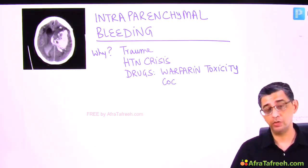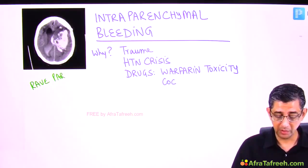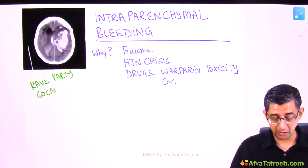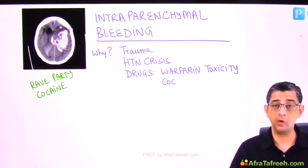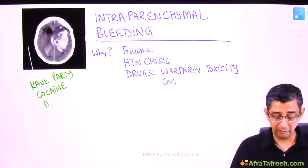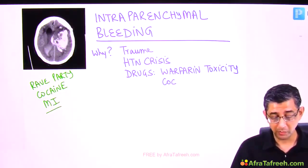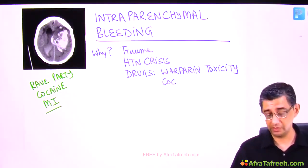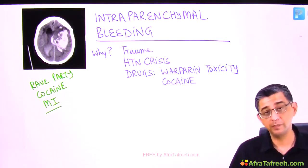I can also talk about rave parties. A young teenager goes to a rave party and uses cocaine — a powerful vasoconstrictor. It can constrict the coronary circulation causing myocardial infarction, but the same cocaine can contribute to vasoconstriction of brain blood vessels, and the result could be a brain hemorrhage.